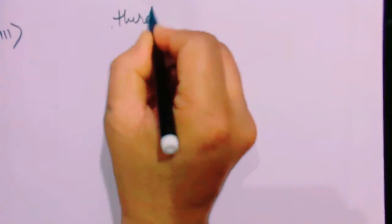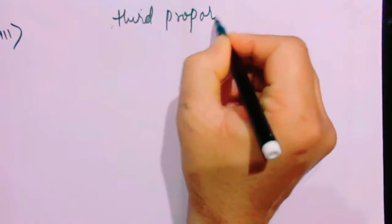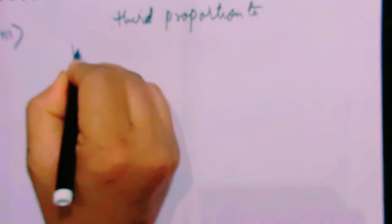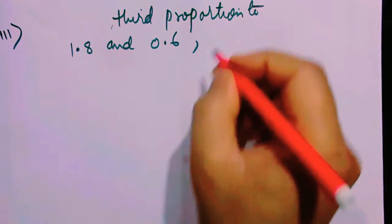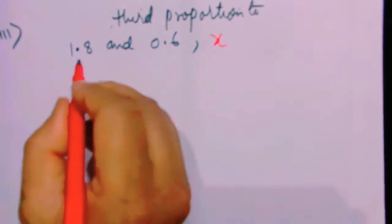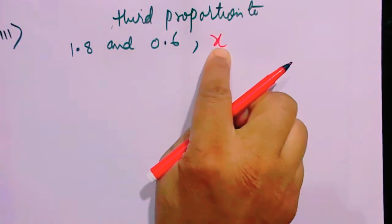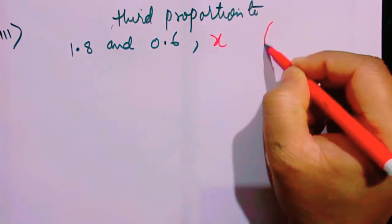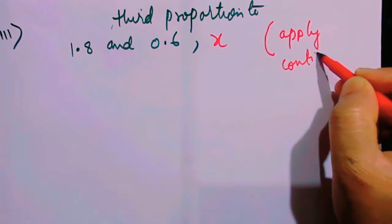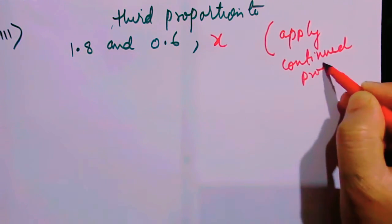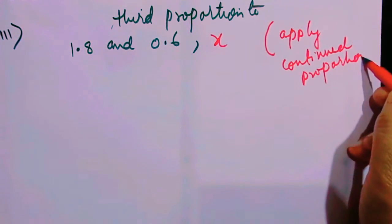Number 3 states: find the third proportion of 1.8 and 0.6. Why not take the third proportion as x? When you take the third proportion as x and apply continued proportion, then in that case we write that the ratio of the first and the second is in proportion to the second is to the third.